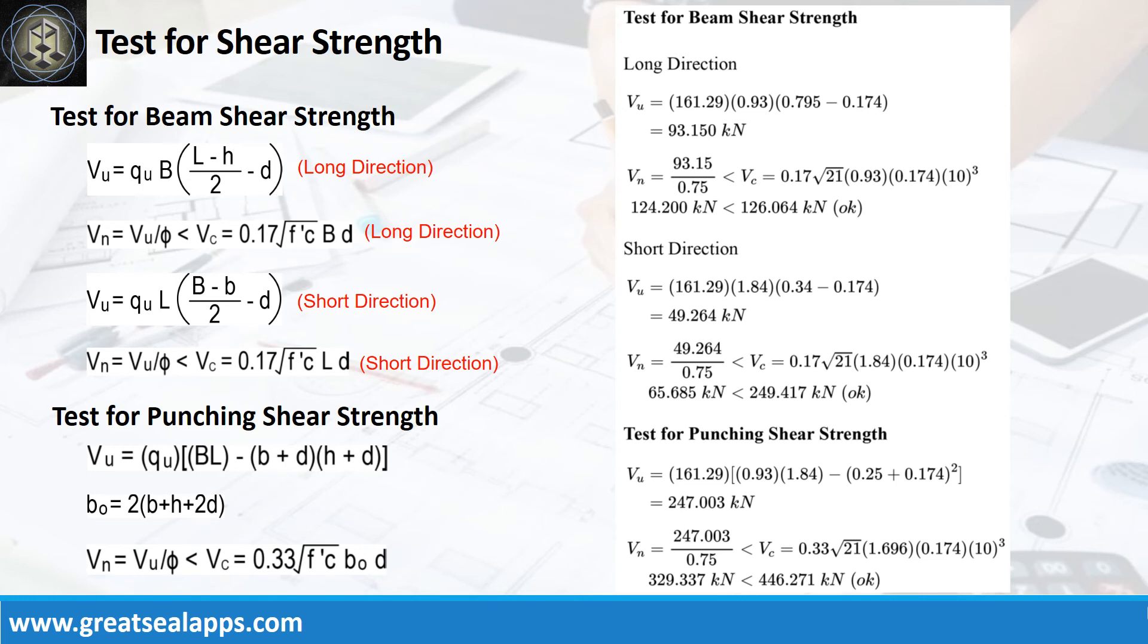Less than 249.417kN concrete capacity. The factored punching shear force is 247.003kN. The nominal force is 329.337kN, less than 446.271kN concrete capacity.